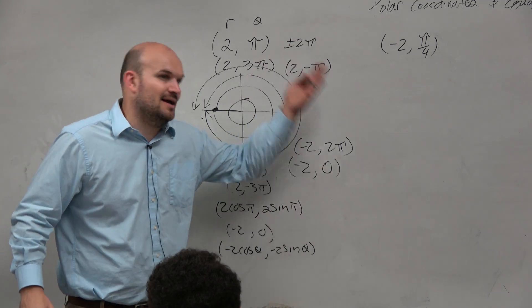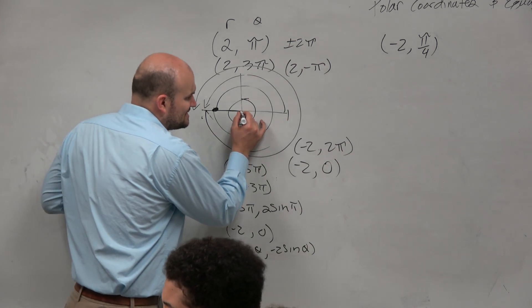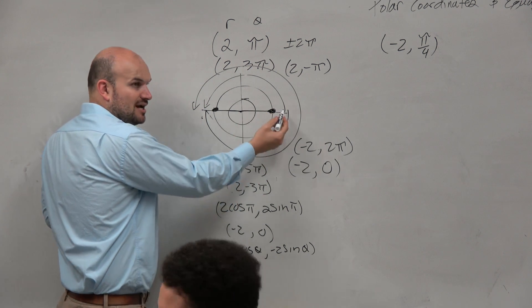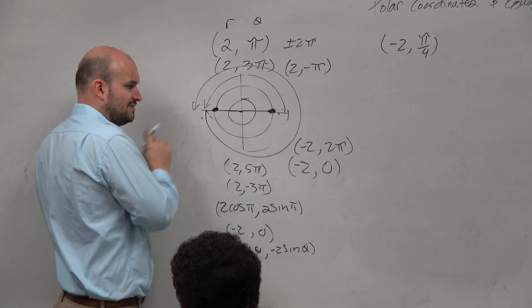Or you could do 4 pi, 6 pi, 8 pi, negative 2 pi, negative 4 pi. But what that means is, again, what we're talking about, that negative point is this point, but it's a reflection, so it's giving you that one.